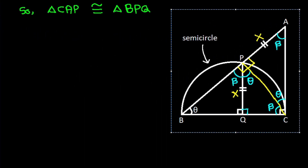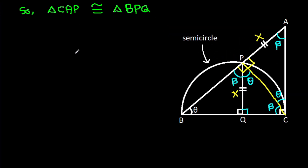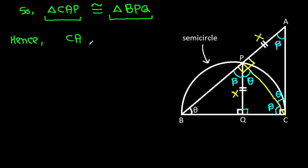These two triangles are congruent, and hence CA will be equal to BP — suppose Y. If CA is Y, then BP will also be Y.